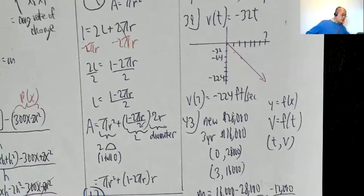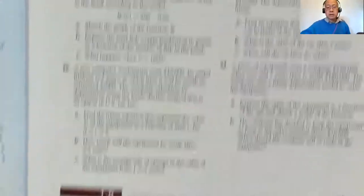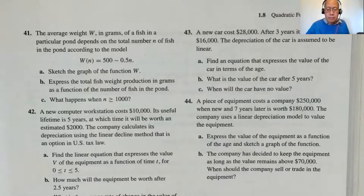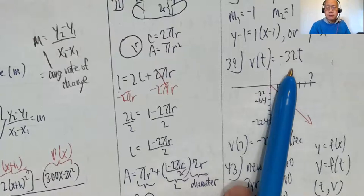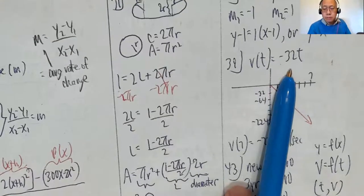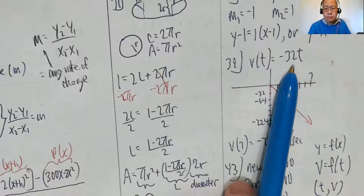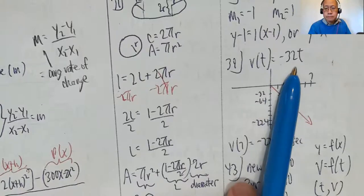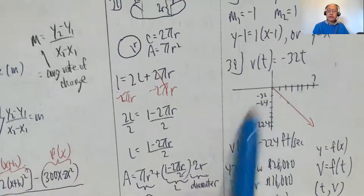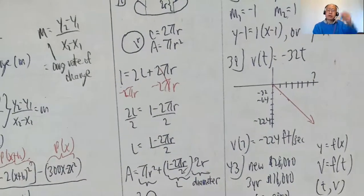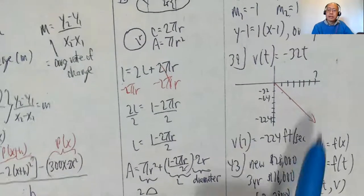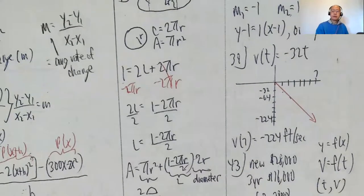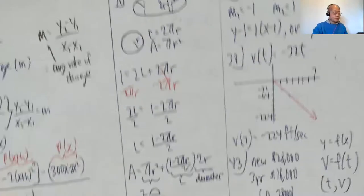A student asked: what is the difference between the −32 in the formula and the −224 result? When time is 7, plugging into v(t) = −32t gives −32 × 7 = −224. The formula itself is v(t) = −32t — that was given. The negative in both cases means the rock is going downward.